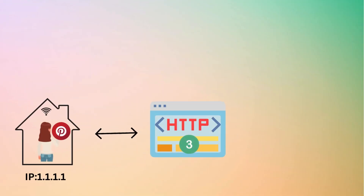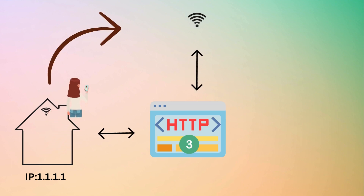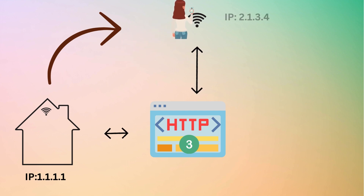For example, consider a user who is using a mobile device such as a smartphone or tablet to access Pinterest, which relies on HTTP3 for communication. The user decides to leave home and starts using cellular data while on the move. This transition involves a switch from the home Wi-Fi network to the cellular network, resulting in the device acquiring a new IP address associated with the cellular network. HTTP3's ability to migrate connections across IP addresses ensures a seamless transition during the switch between networks.